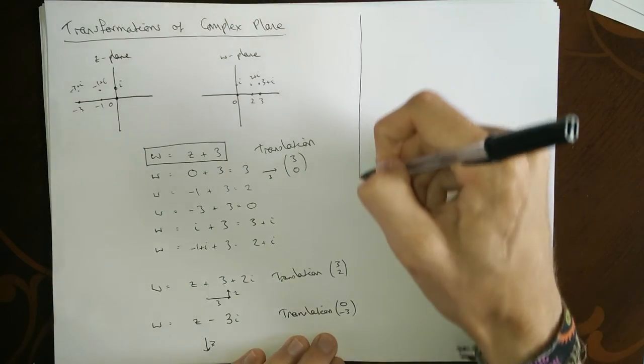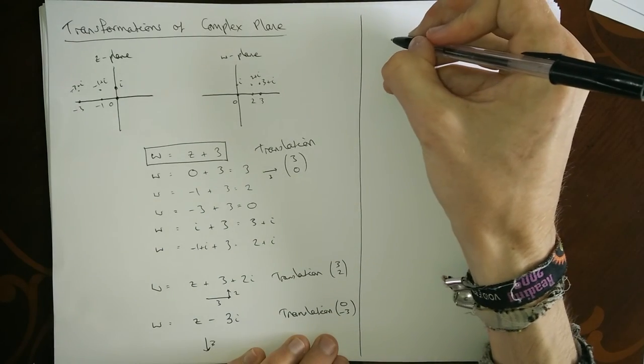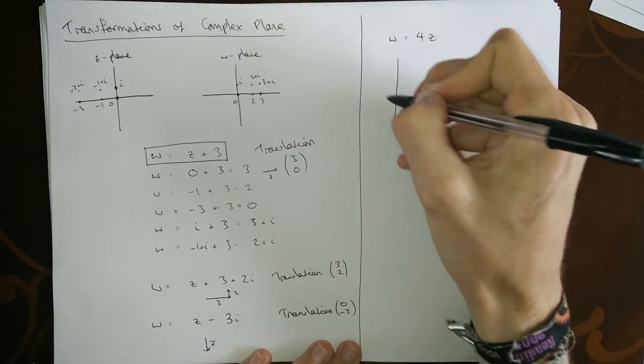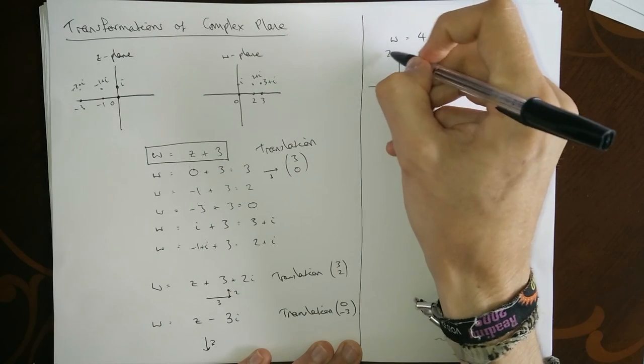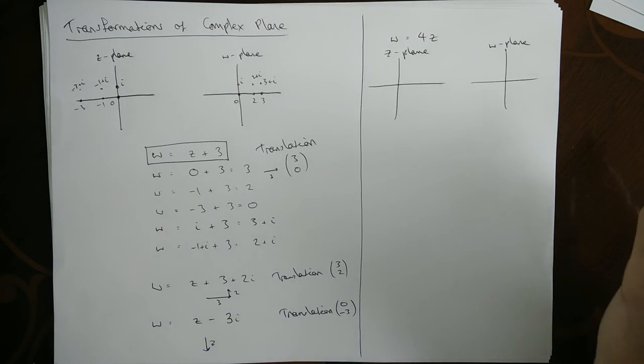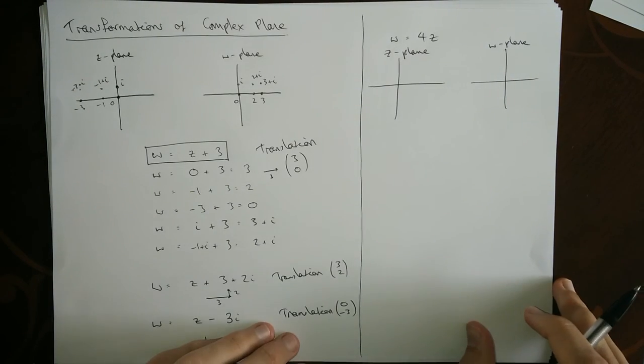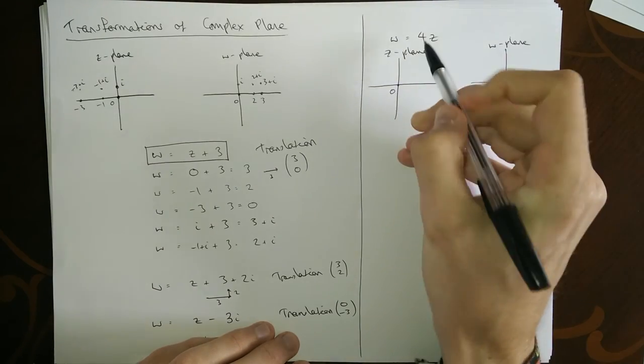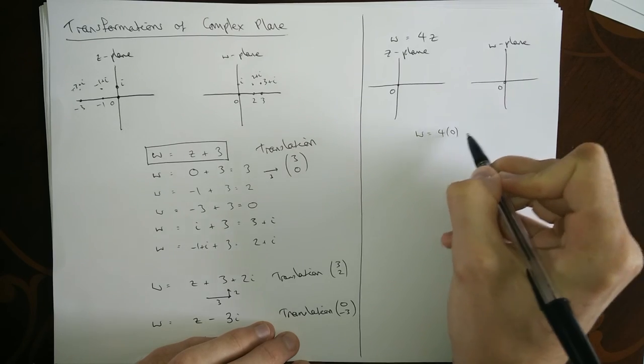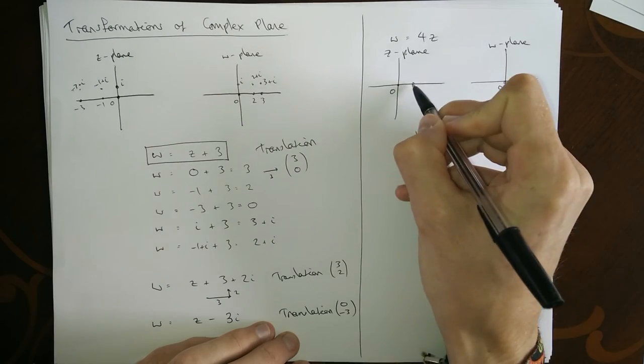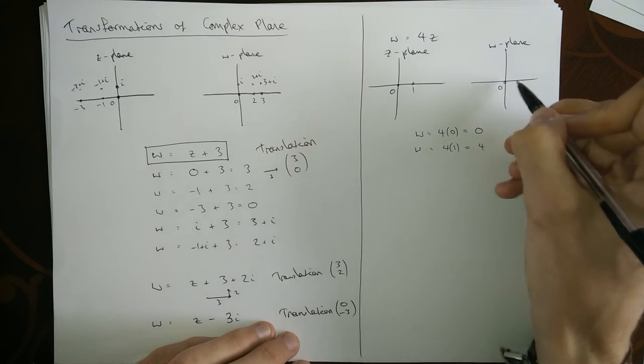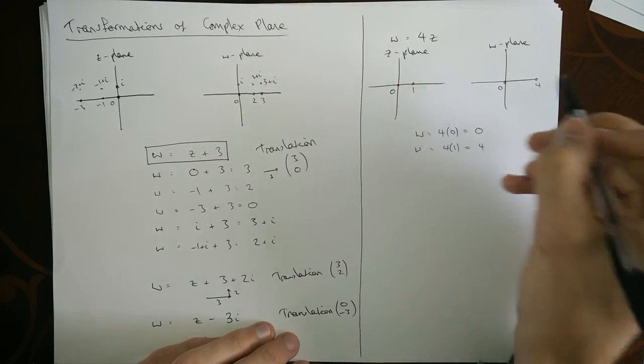Let's look at another type. We could do maybe w equals four z. Let me draw a z plane and w plane. For this one we could map some points. Zero: four times zero is zero. We could map one: w equals four times one, which is going to be four, so it gets mapped over here to four. So the one gets pulled apart, this zero stayed the same place.